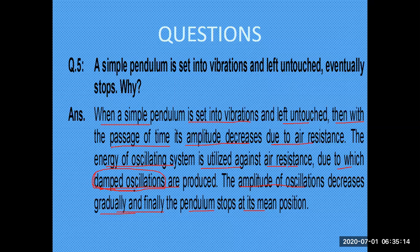Whenever you are asked about this: when a pendulum is set into vibration, with the passage of time its amplitude decreases and eventually it stops at the mean position. The reason is simple — at the starting time, when we transfer energy to the pendulum, vibrations are produced, and the pendulum has to do work against air resistance. The energy is utilized against air resistance, amplitude decreases with time, and this type of oscillation is called damped oscillation. The simple pendulum then stops at the mean position. These are some of the applications of damped oscillation.